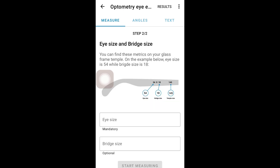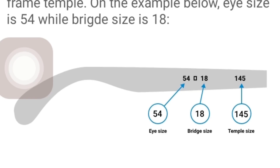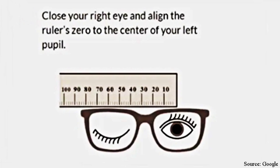My IPD is 54 millimeters. You can also estimate your IPD using a mirror and a tape measure or ruler. Stand in front of a mirror and hold the tape measure or ruler above your eyes and follow these steps.